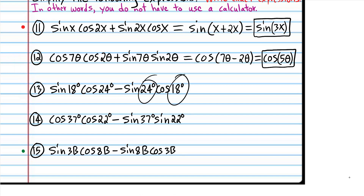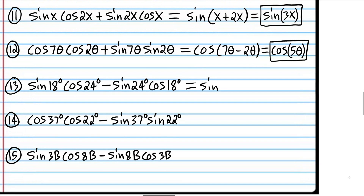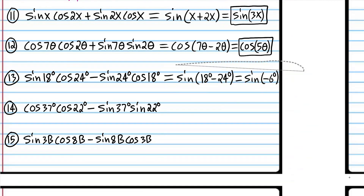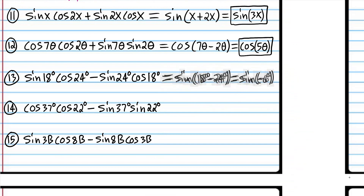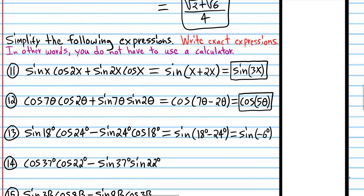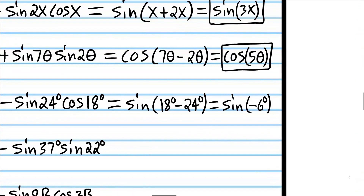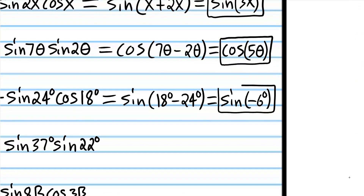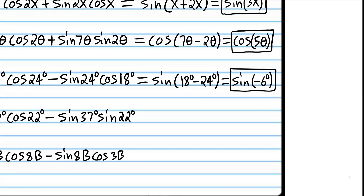Now we have actual angle measures rather than variables, but these problems work the same way. We have a product of sine and cosine, so that's going to use the sine formula. We're subtracting, so we subtract the angles: 18 degrees minus 24 degrees simplifies to negative 6 degrees, giving sine(−6°). We could use a calculator to approximate, but the directions say to leave it in exact form — if we used a calculator we'd have to round off, and we don't want that.